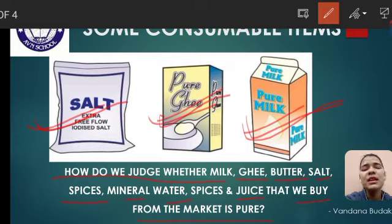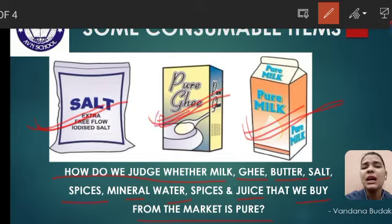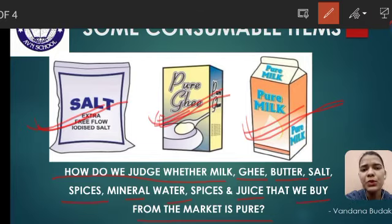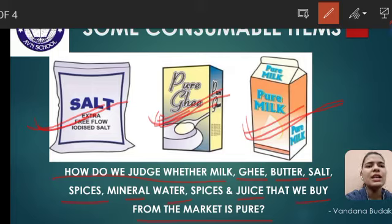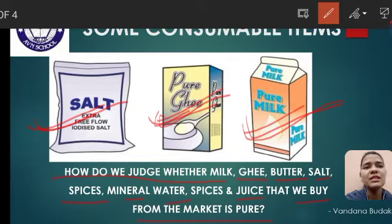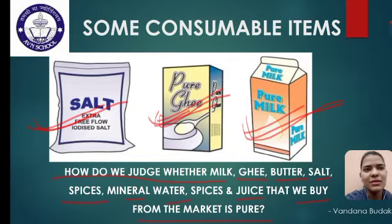Pure means क्या होता है? Having no adulteration — जिसमें मिलावट नहीं हो. यानि कि अगर मिलावट नहीं है, तो यह pure है, और अगर मिलावट है, तो यह pure नहीं है. So हम अपना यही जो concept है, इसको clear करते हैं about purity, because we are studying about chemistry.